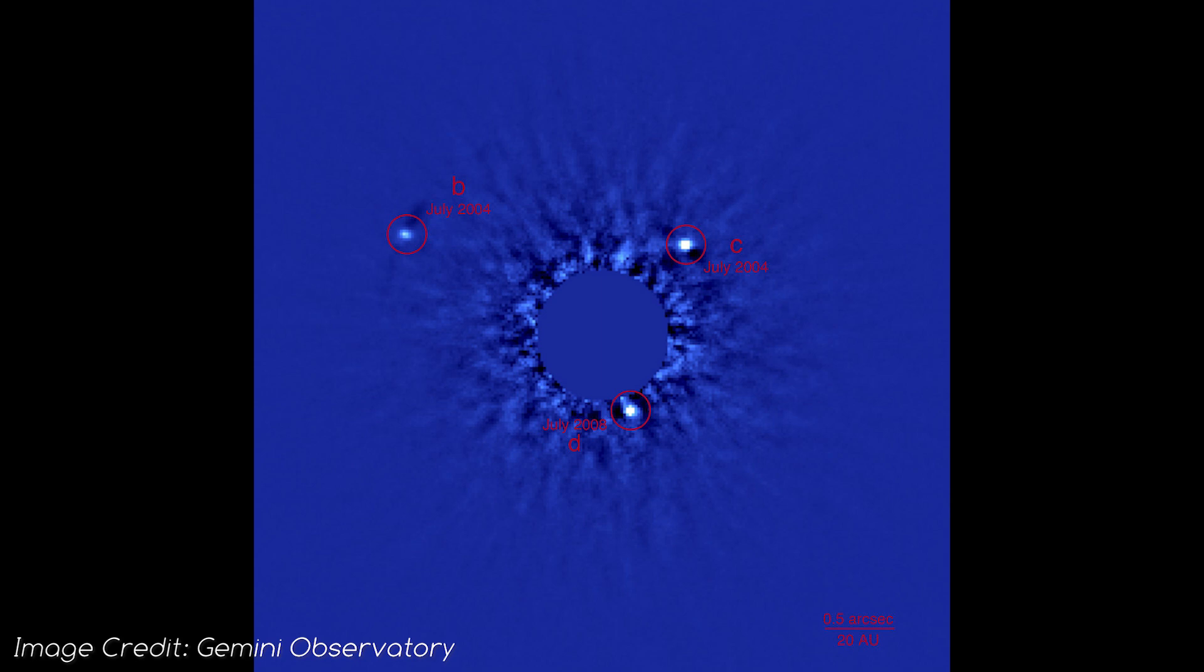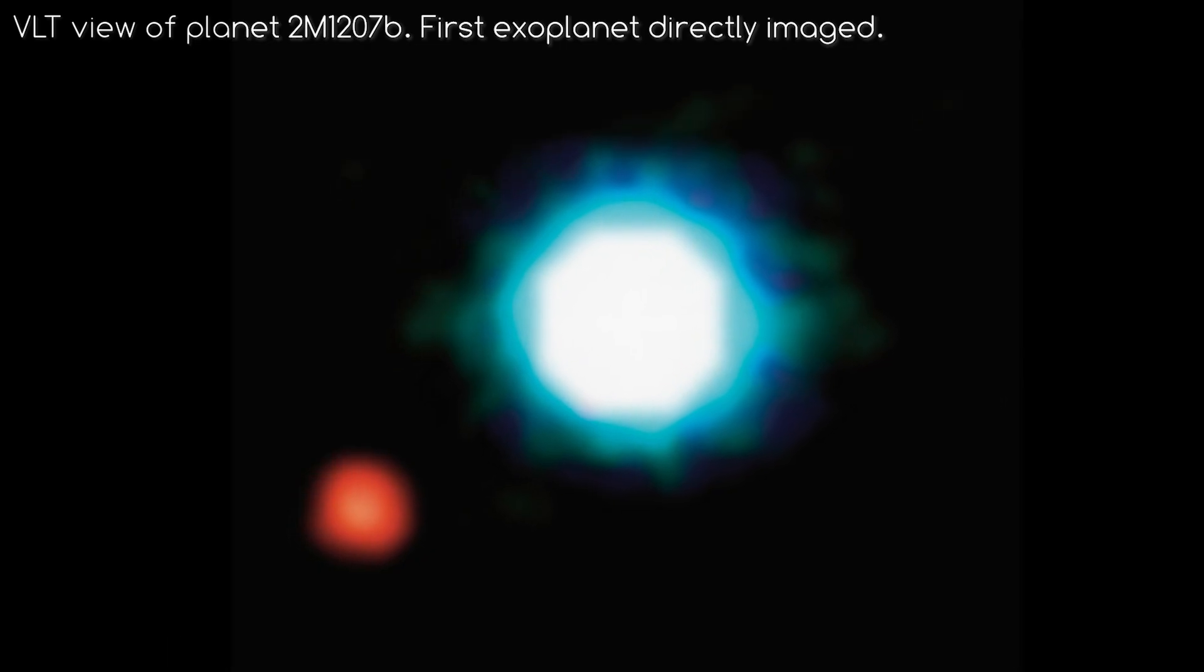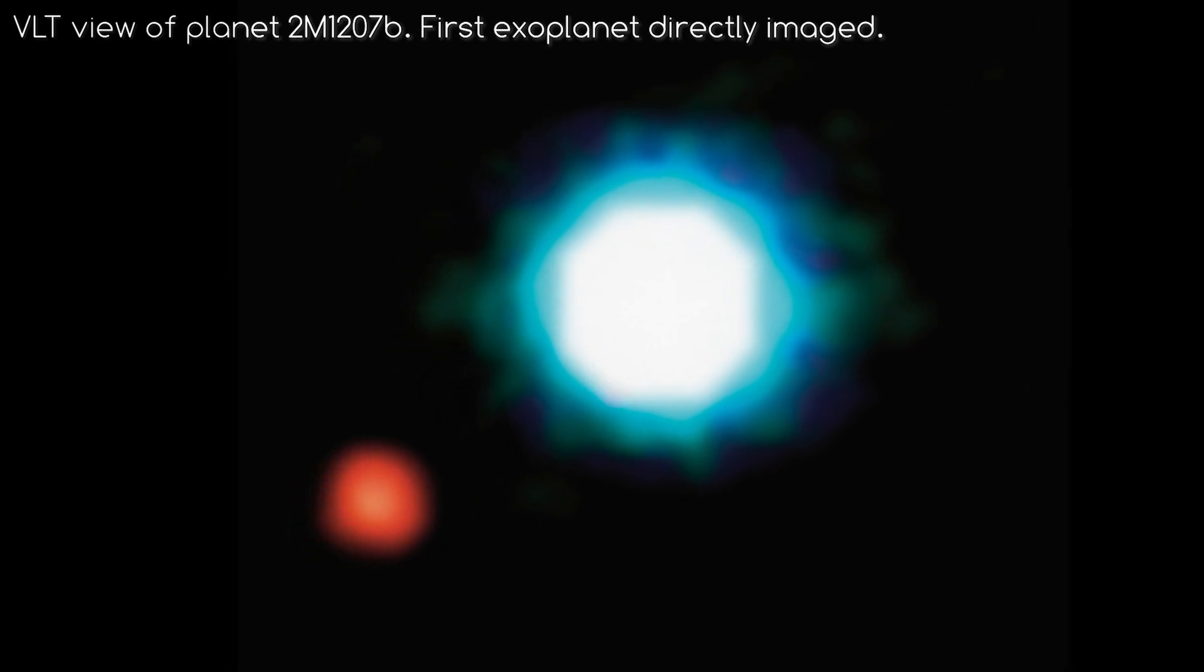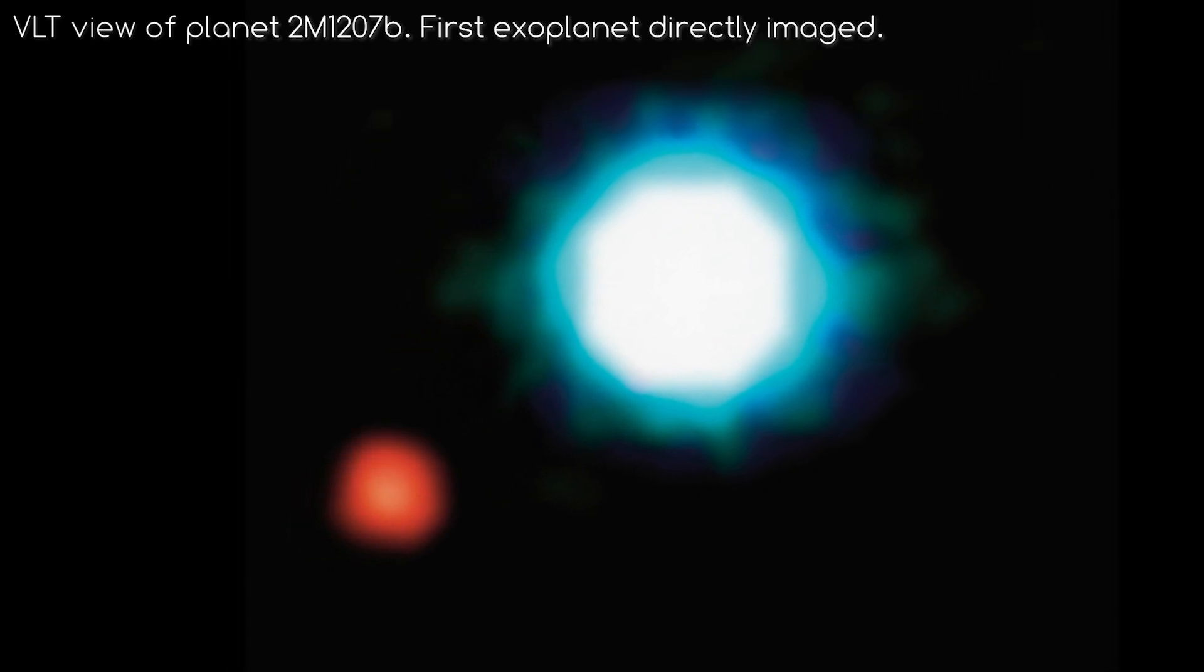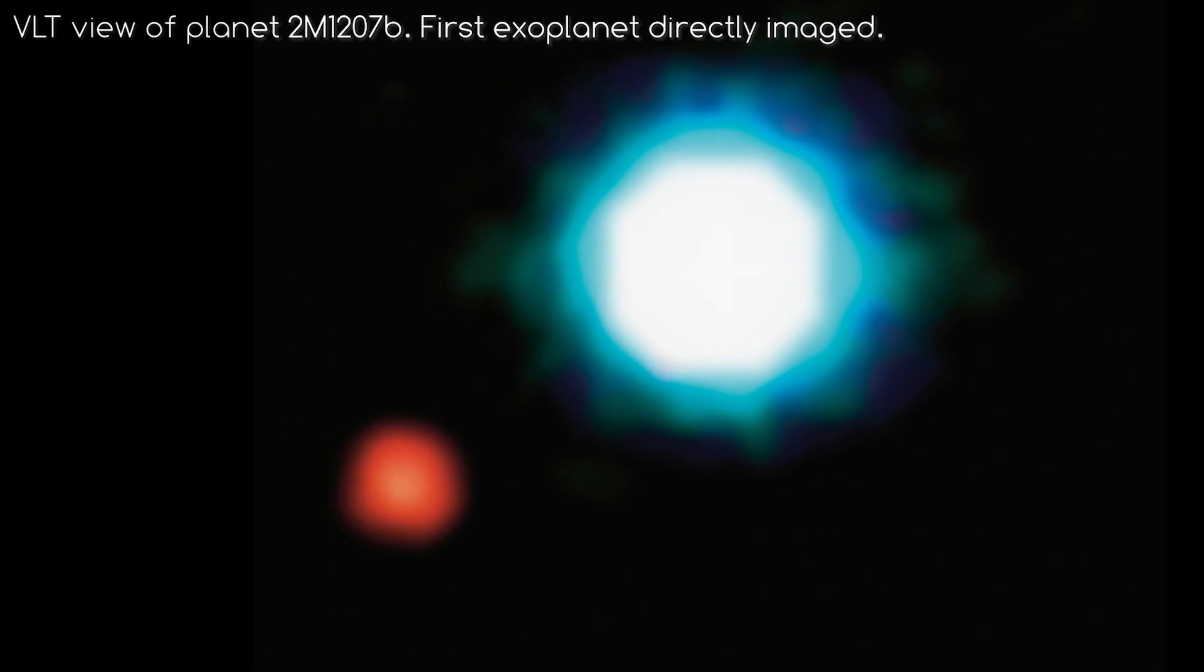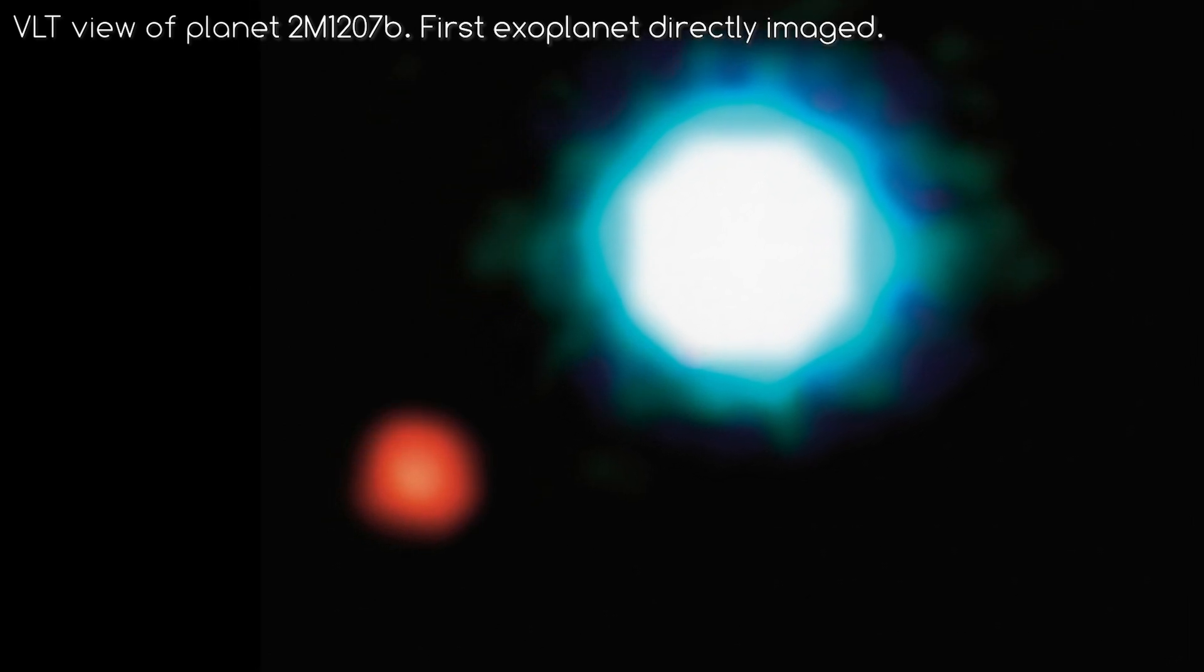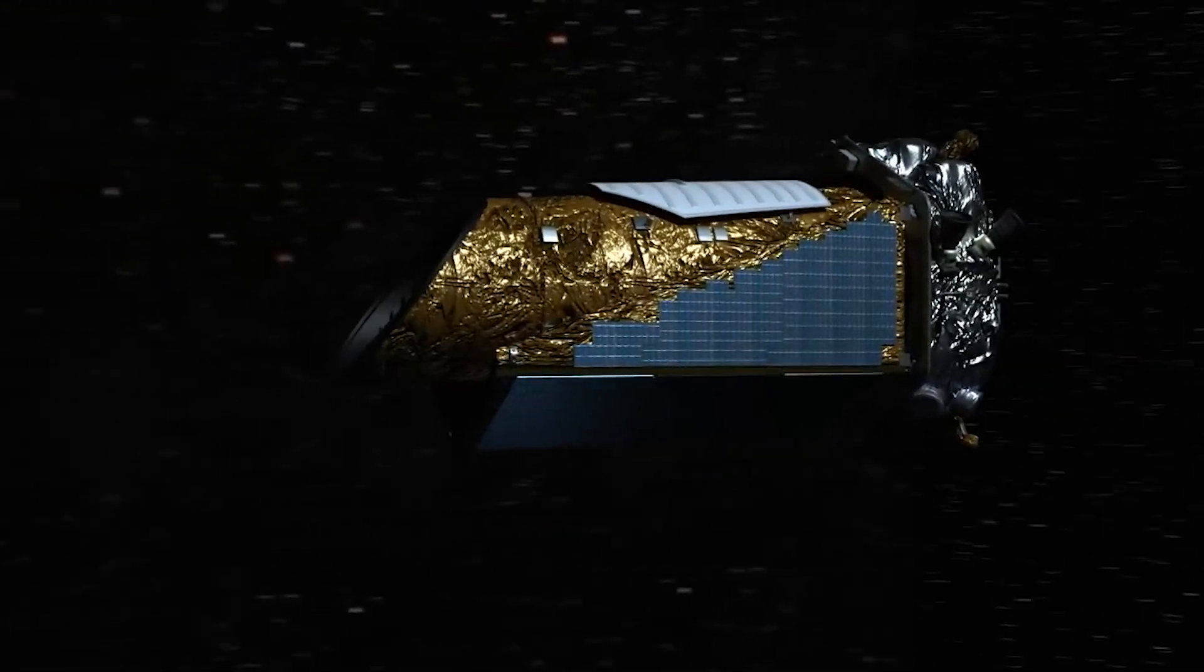Now, we've not been able to actually image exoplanets in any kind of detail. In fact, this is the clearest real image we have of an exoplanet, taken by ESO's Very Large Telescope, which may make you question, if this is the best image of an exoplanet we have, how can we discover exoplanets, and how do we know life could be on one?